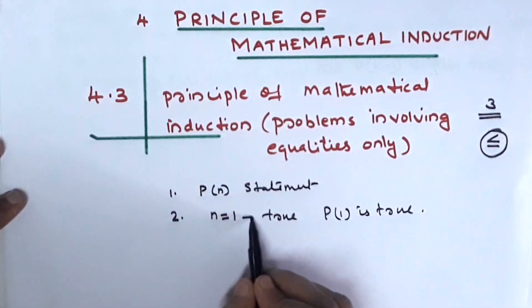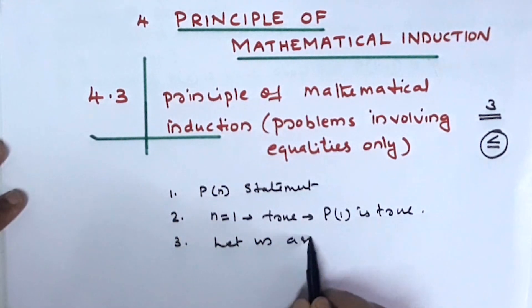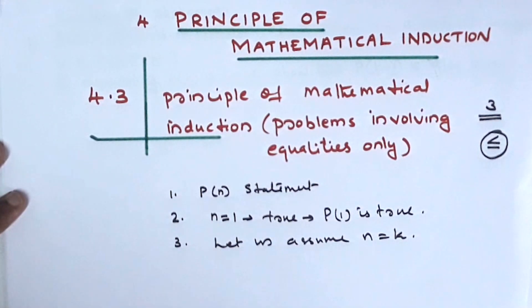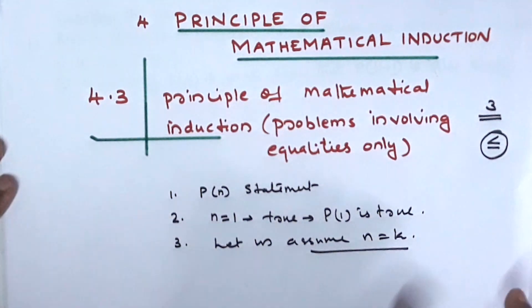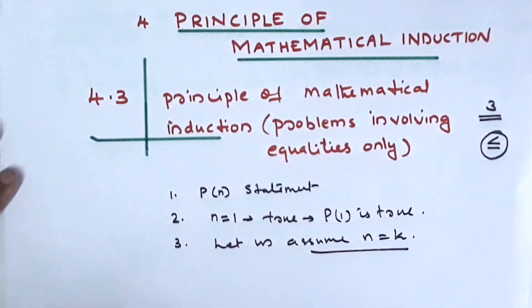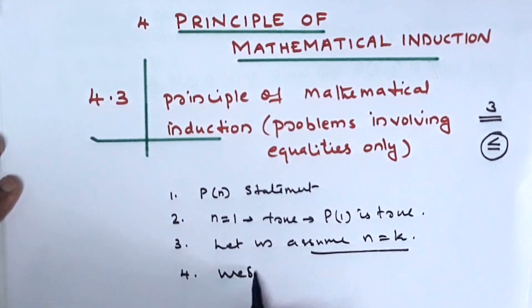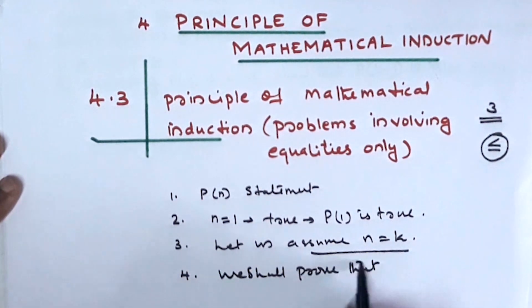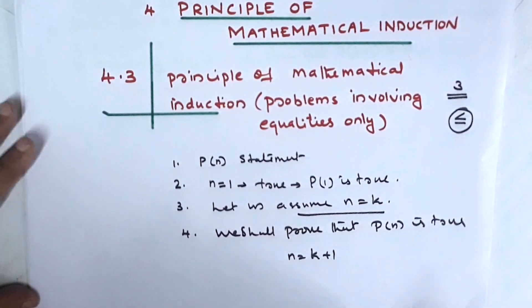We will do the second step. Let us assume that n equal to k. That is the third step — our leading step. It is a very important step. We will do the next step: let us prove that P(n) is true for n equal to k plus 1.